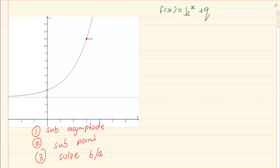Now let's start with our asymptote. We're going to have f of x is equal to B to the power of x plus 3. Then we are going to substitute our point, which is 3 and 11.